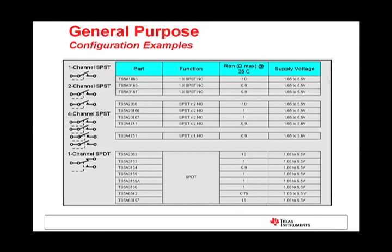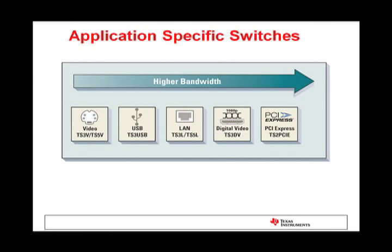Here, we get into the general purpose configuration examples for our analog switches. TI has varieties of not only single pole single throw switches operating from 1.65 to 5.5 volts, but also up to 4-channel single pole single throw switches. As you can see, we have multiple different devices that can accommodate any type of need. Now that we have covered the general purpose switches, let's take a look at our application-specific switches.